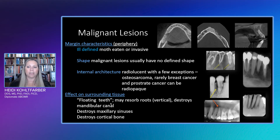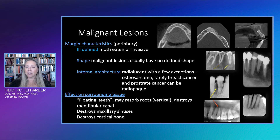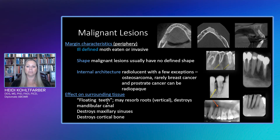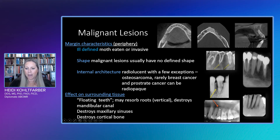Looking at malignant lesions in general: they tend to be ill-defined, with moth-eaten borders and no defined shape — we've just lost cortical borders. Internal architecture is mainly hypodense or radiolucent, except in osteosarcomas where we can see some opacities. Rarely, breast and prostate cancer can be radiopaque. Effects on surrounding tissues: we can see teeth floating in air because these lesions travel so quickly they erode through all bone support around the teeth. Occasionally we can also see a spiked root appearance — a vertical root resorption. But sometimes it doesn't bother because it's just traveling so quickly and the teeth appear to float in air.